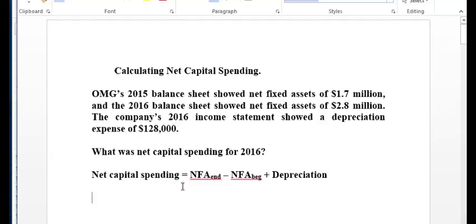When did we end? We ended in 2016. So we are going to take $2.8 million, $2,800,000, let's see if I get my numbers right, minus when we began, $1,700,000, plus our depreciation number of $128,000.